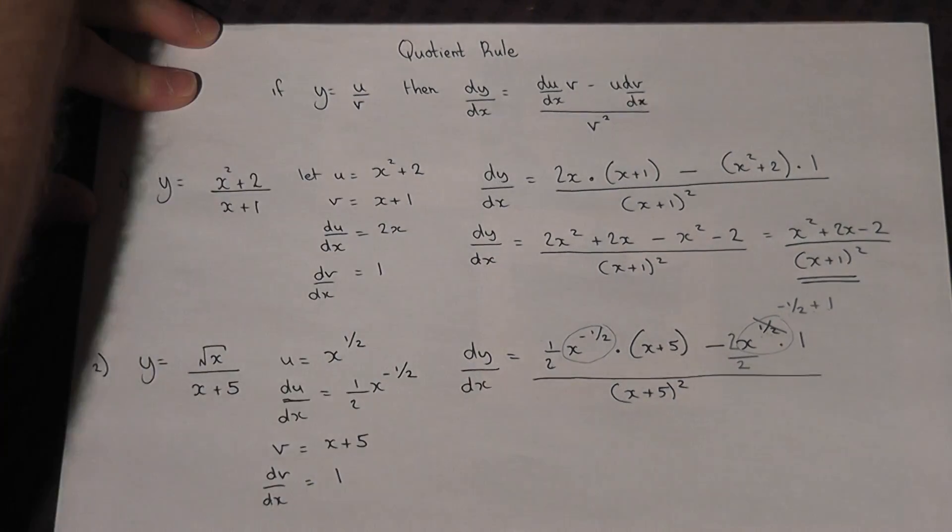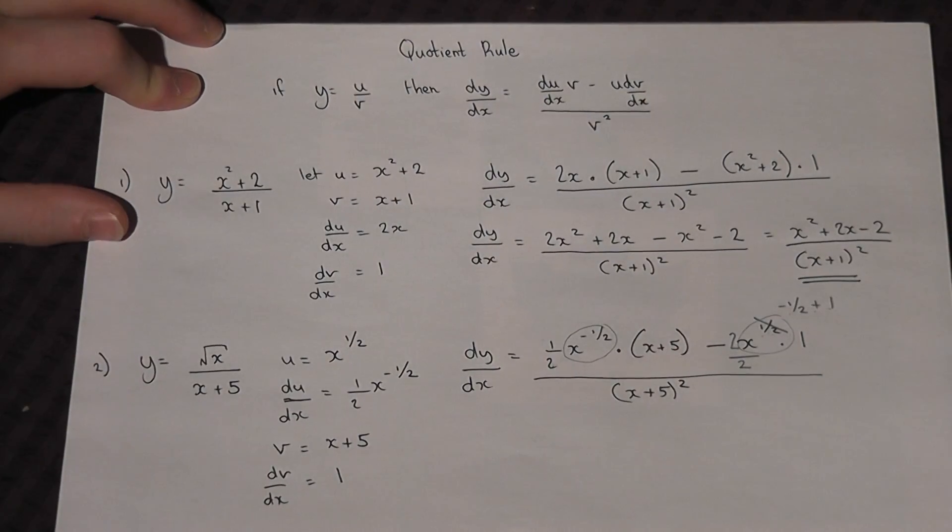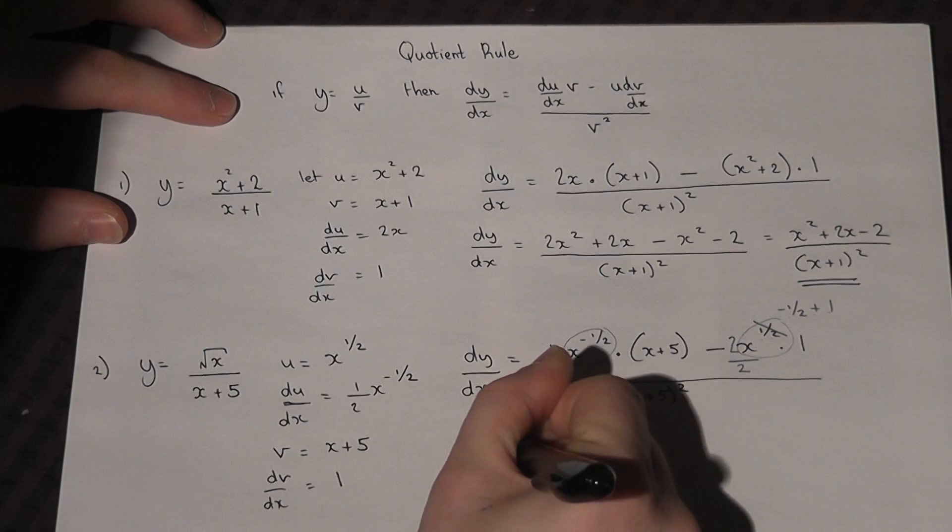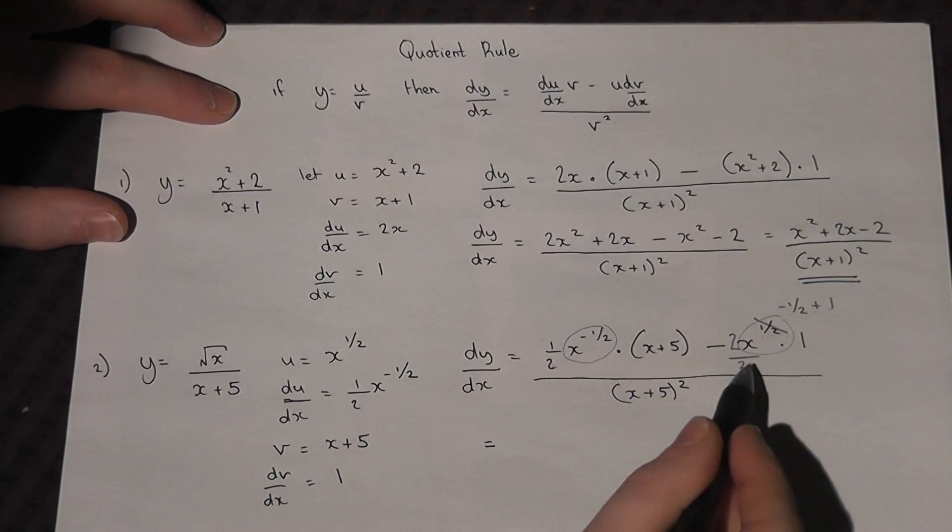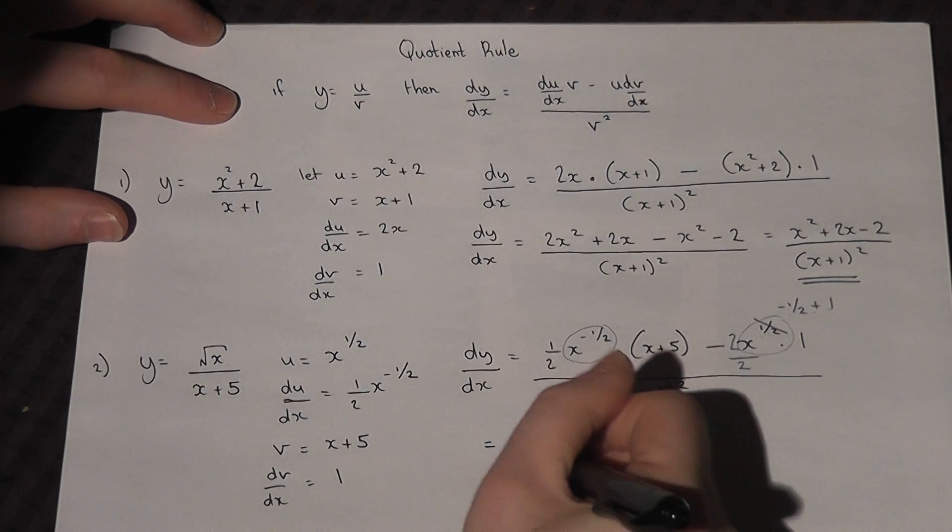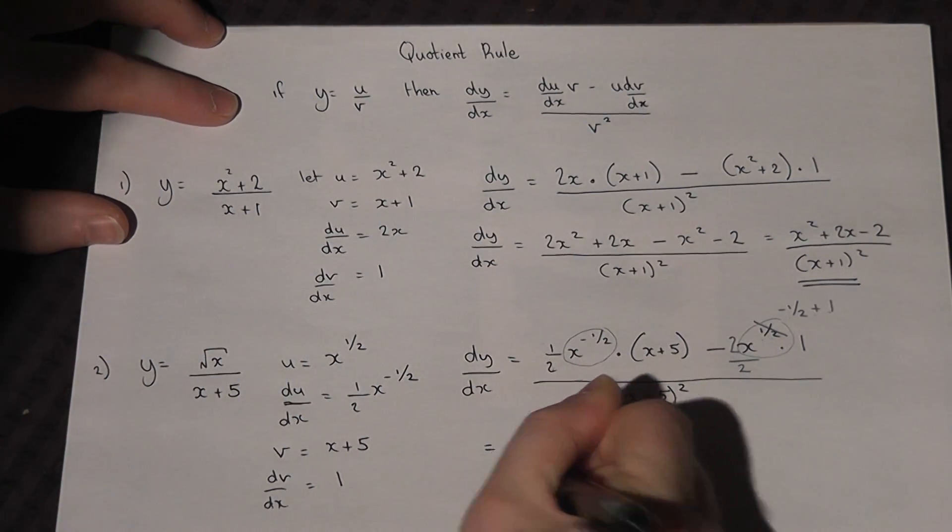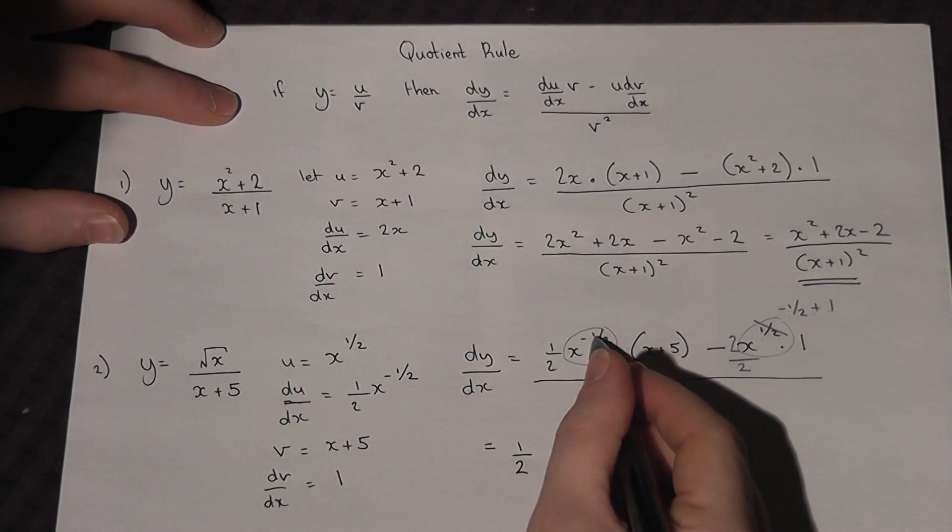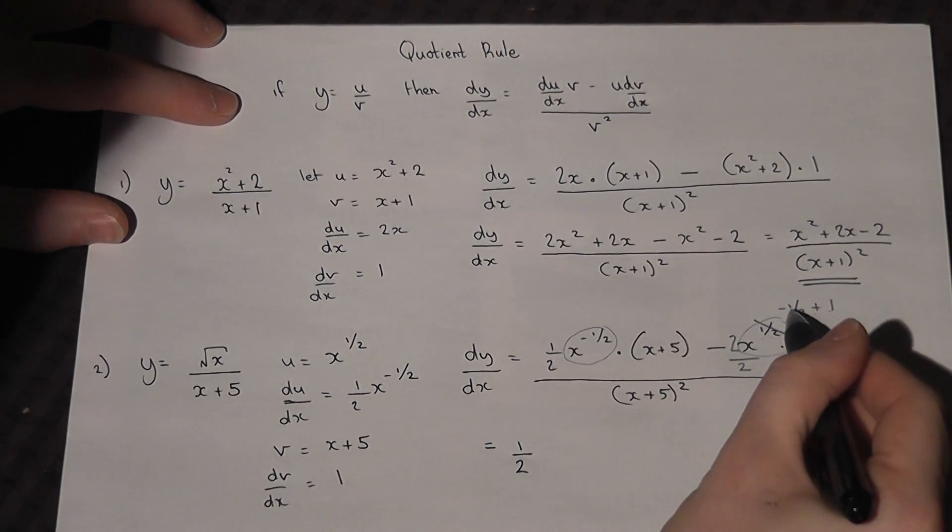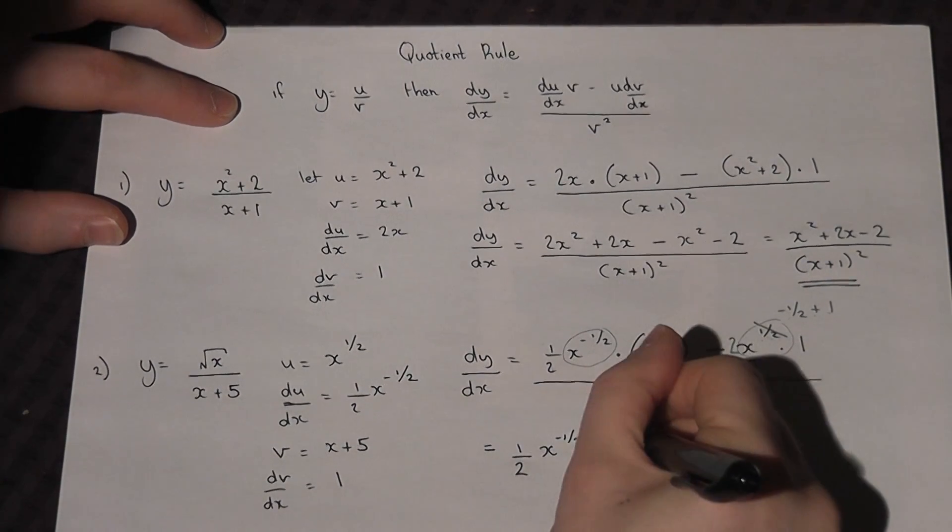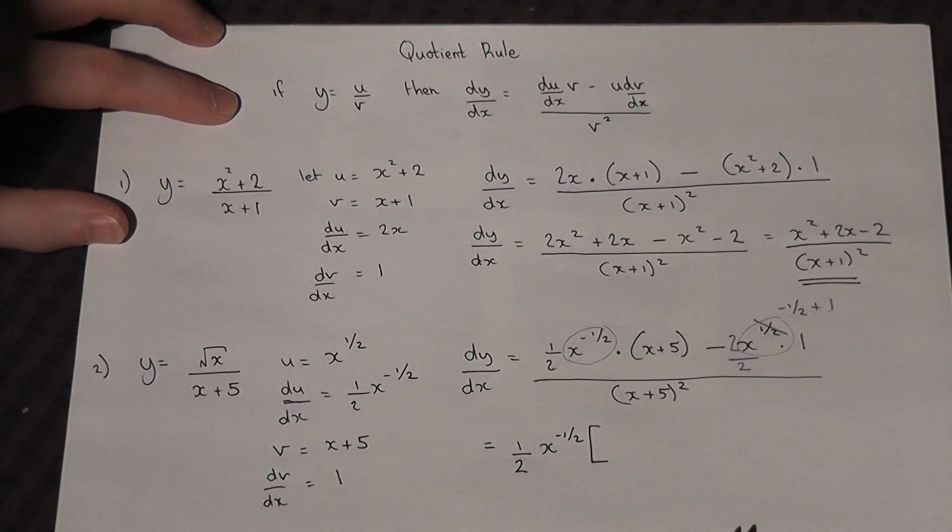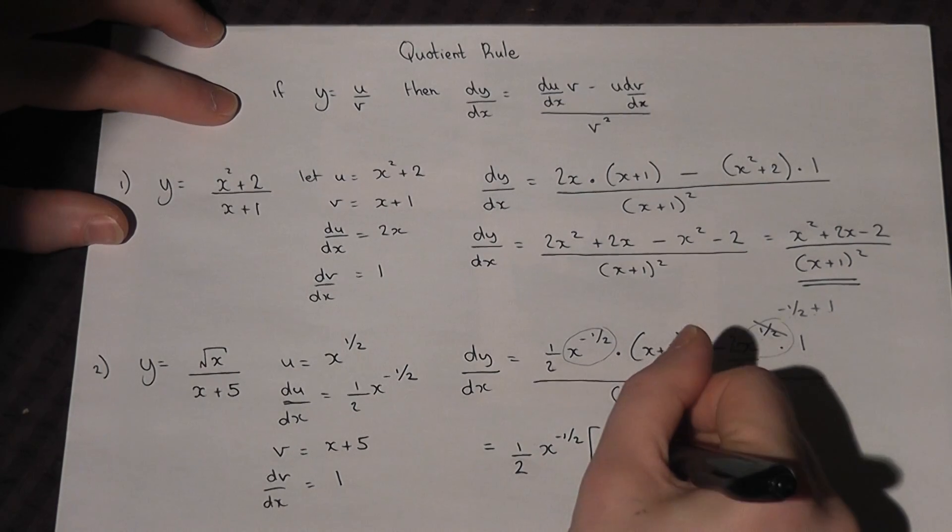Now then, you may think, well, what's the point of doing all that messing around? Well, here's why. If I now try and factorize this, then there's a half there. So I can pull a half out. There's also an x to minus 1 half. So that's also a factor. Then I'll put a big square bracket.